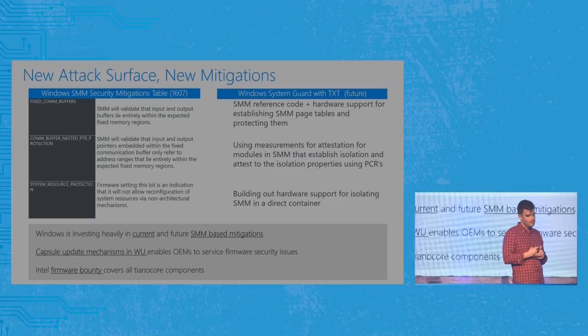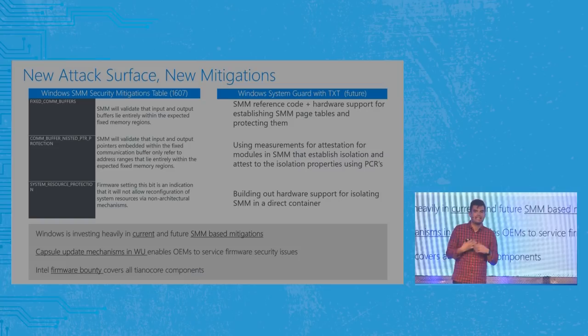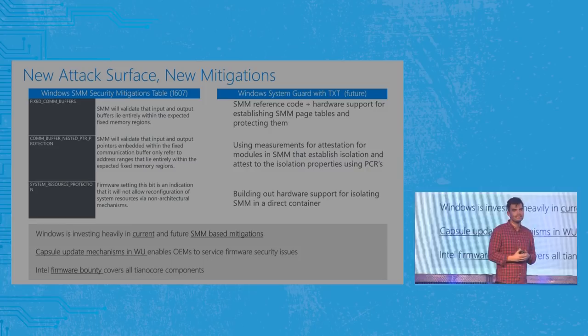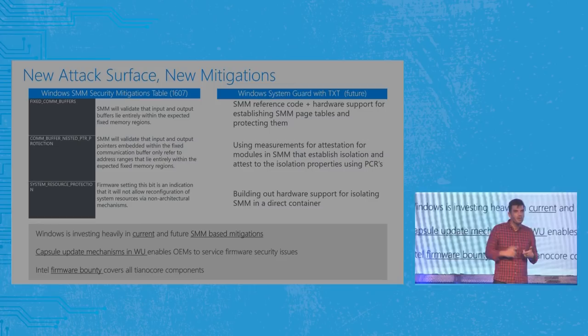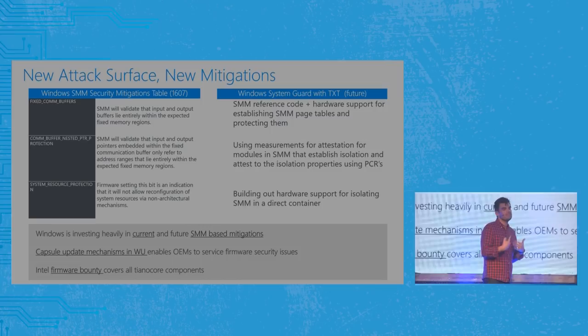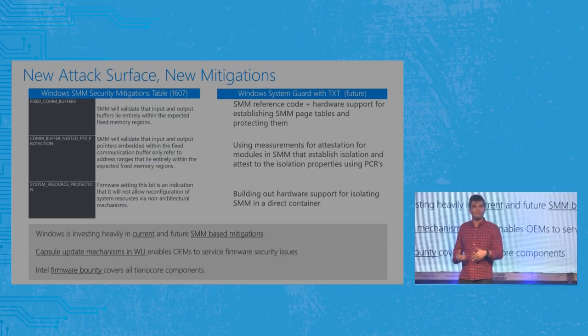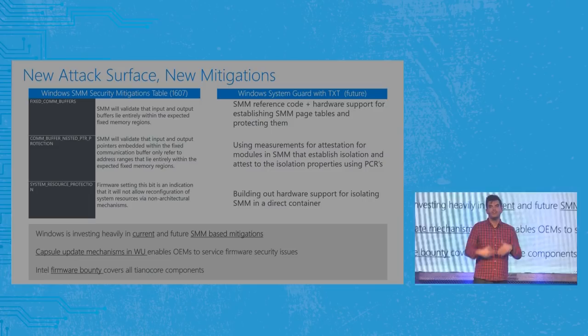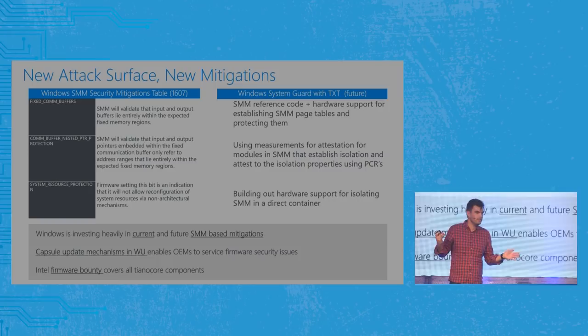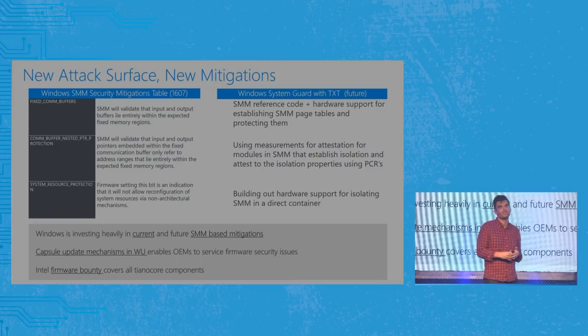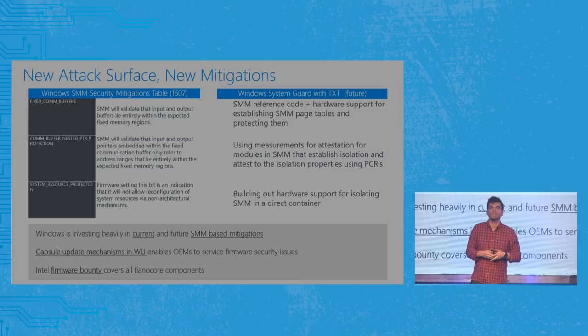The second way we can help with the firmware problem: capsule firmware updates. If we learned anything from the last couple of months of hardware vulnerabilities, we need a way to rapidly patch firmware and CPU microcode across the ecosystem. Windows Update supports capsule updates for vendors, meaning we can eventually get into a cadence where on Patch Tuesday we ship proactive security updates for not just Windows software but the core trusted computing base including firmware. Intel also has a firmware bounty for Tiano Core components — the open-source version of their UEFI firmware — so if you find a vulnerability there, I encourage you to look and collect a nice bounty.